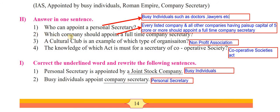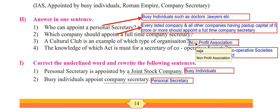The second one: which company should appoint a full-time company secretary? Every listed company and all other companies having paid-up capital of 5 crores or more should appoint a full-time company secretary. You can also say joint stock company, or every listed company, or any other company having paid-up capital of 5 crores or more should appoint a full-time company secretary. Third: a cultural club is an example of which type of organization? The correct answer is non-profit association.